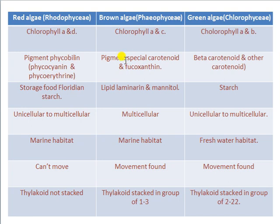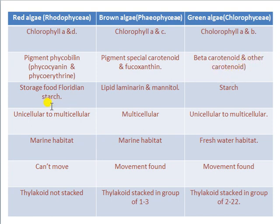Brown algae have a special carotenoid pigment, fucoxanthin. Carotenoid and fucoxanthin are present in brown algae, which is why the color of the algae is brown due to fucoxanthin. Green algae have beta-carotene and other carotenoids as accessory pigments.